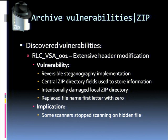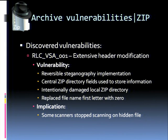The first vulnerability is caused by extensive header modification. We created our own steganography implementation to test our tool, and in the process successfully hid a file but made extensive modifications to the file header. We used central directory fields to store information, which intentionally broke the file format, replaced the first filename with zero, and erased the local header content — causing archive processors and antivirus software to not work correctly.